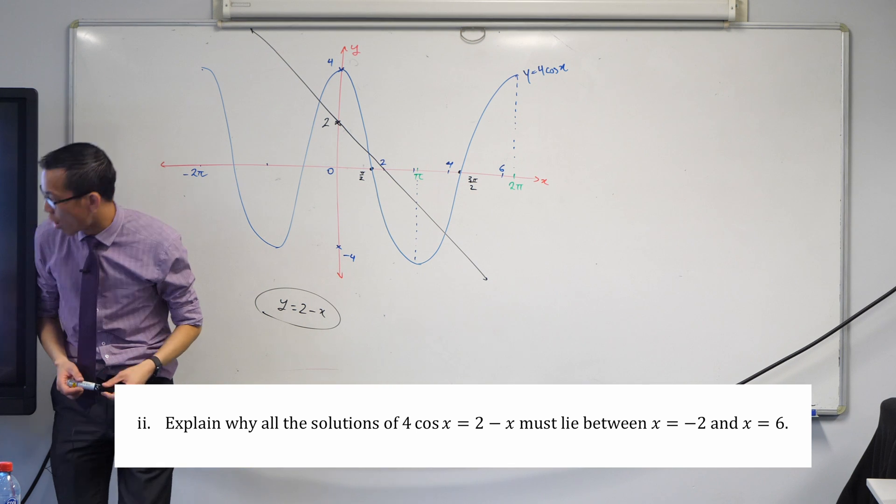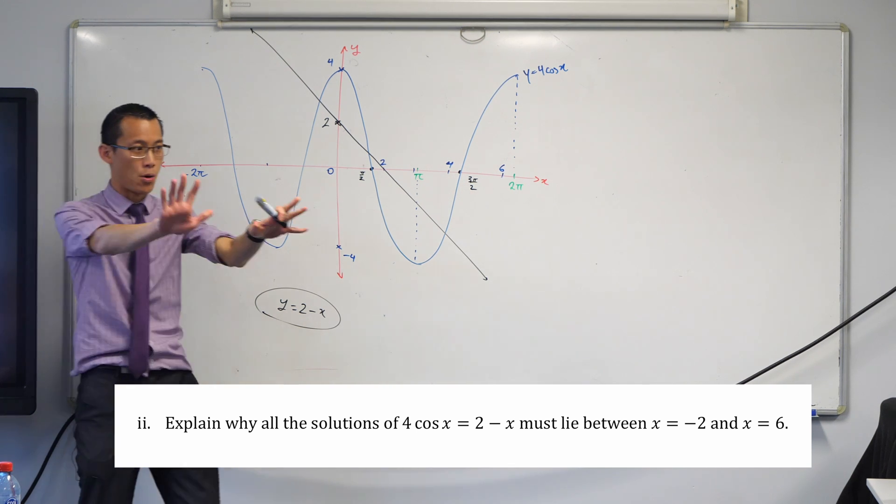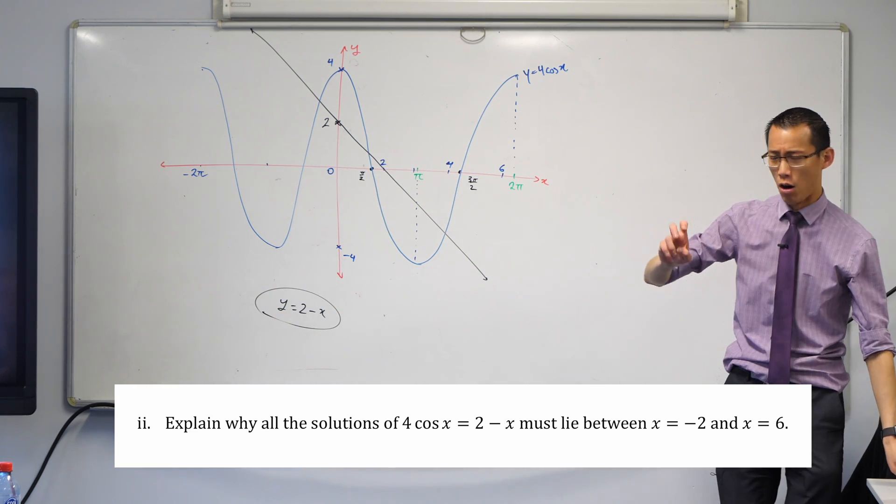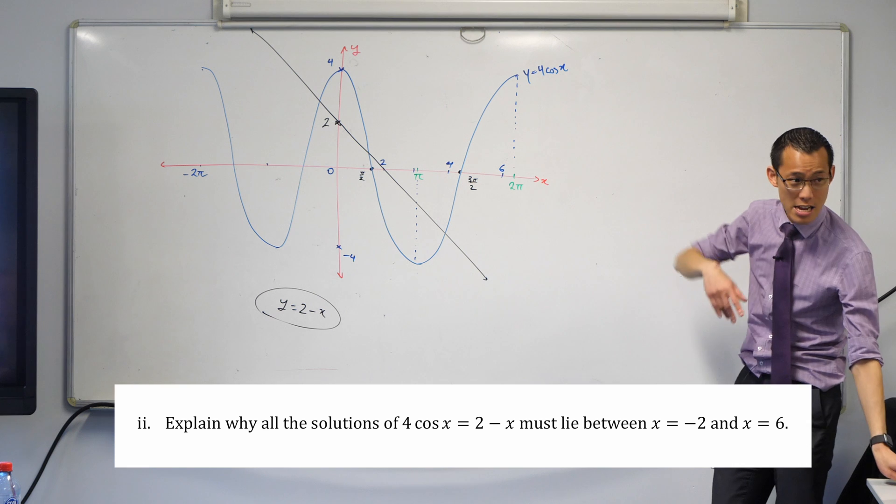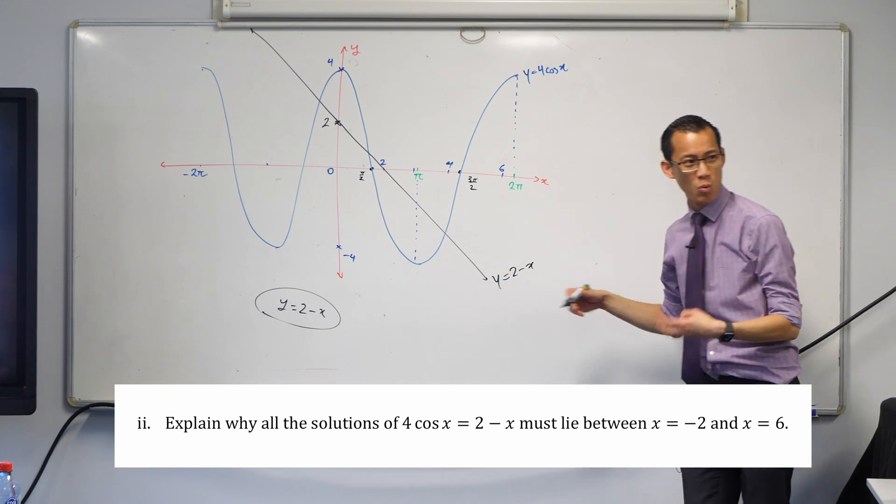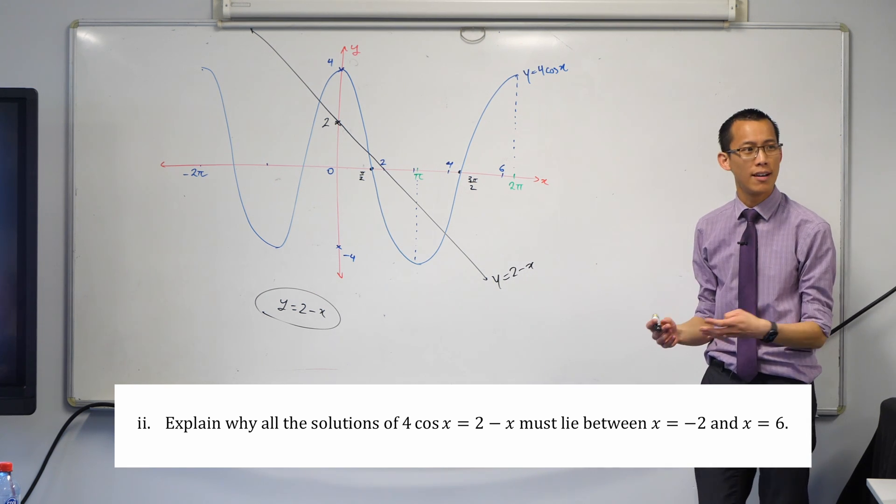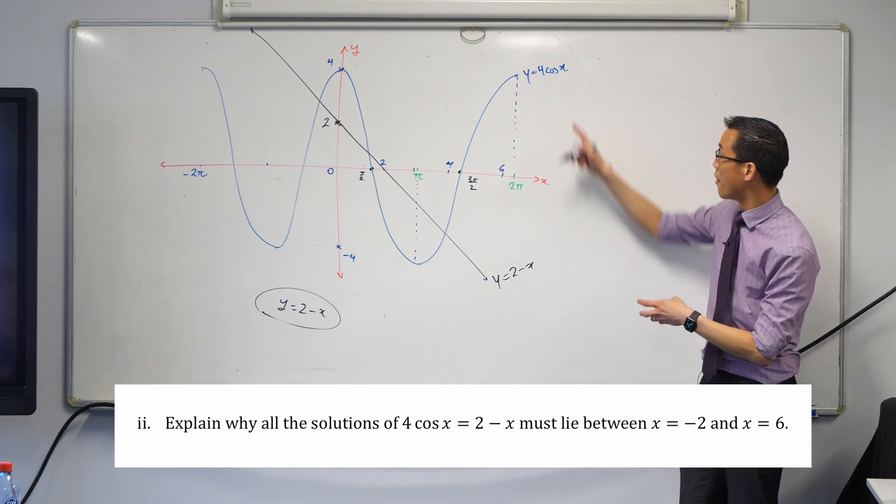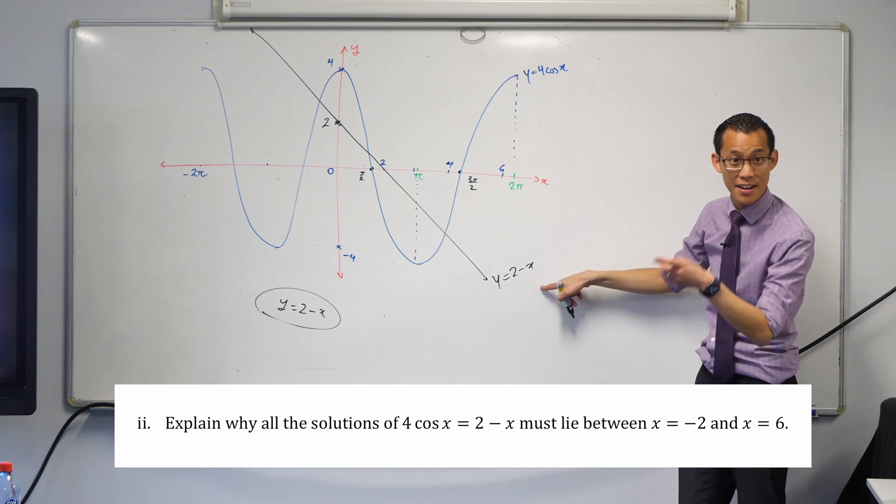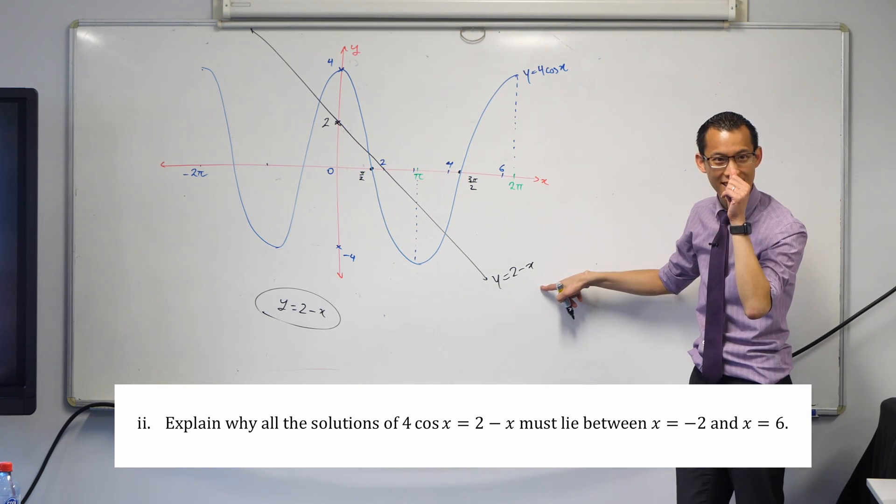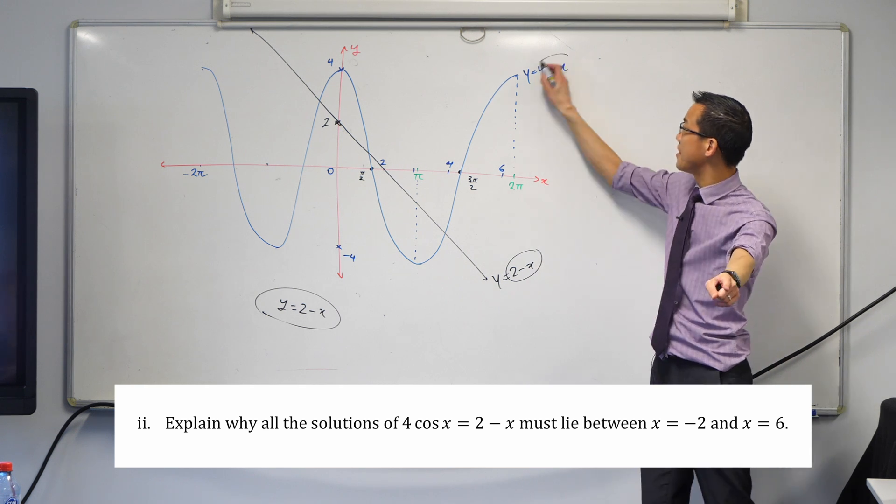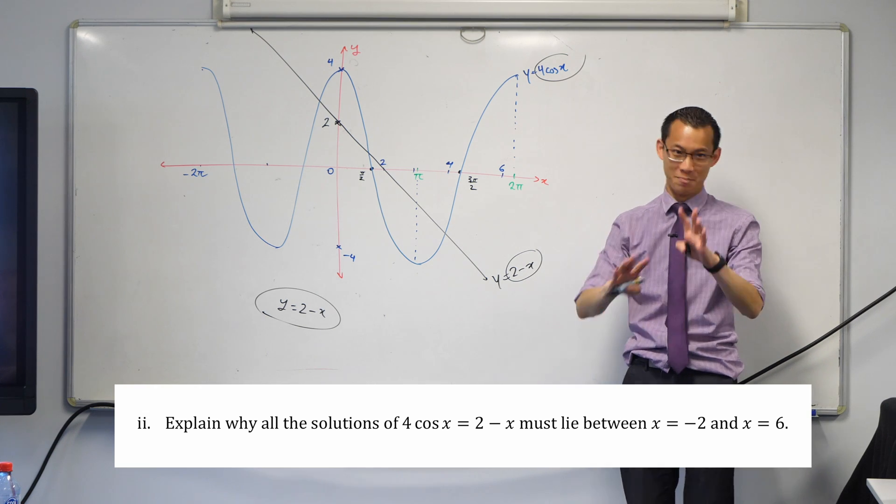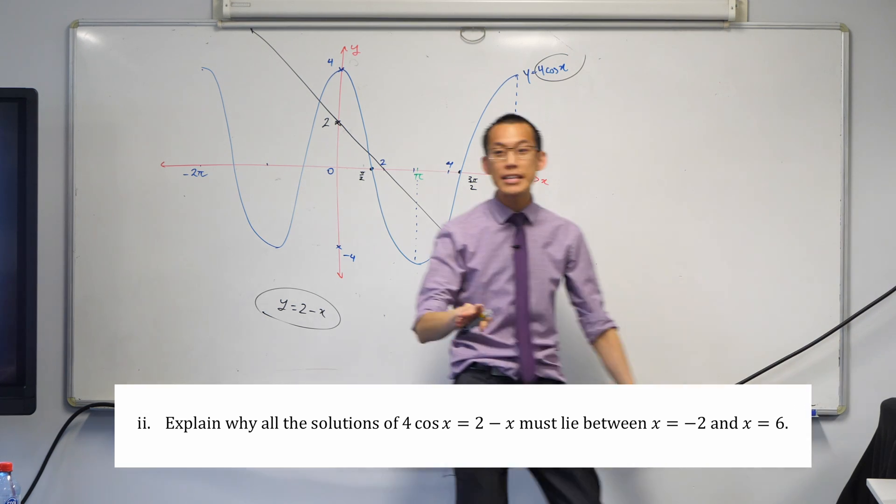Explain why all the solutions of 4cos(x) equals 2 minus x, pause, before you even go to the rest of that. What is it even asking? The solutions of 4cos(x) equals 2 minus x. What is that even referring to? Ashan? So, an x equals something and it's valid. Okay, so I want there to be a valid solution for these two things being together. I'm asking when each graph collides at one point. Very nice. So it's about this graph and this graph colliding, fine. We would usually say intersecting, but that's okay.